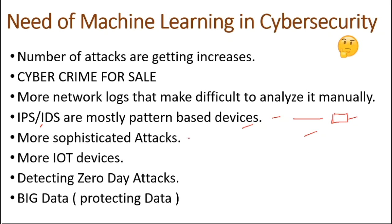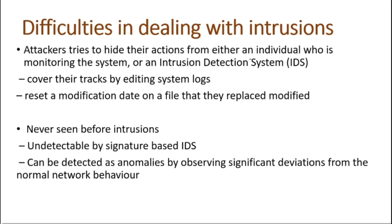We can detect zero-day attacks using anomaly detection in machine learning. In cybersecurity we are getting more sophisticated attacks — attackers are hiding their IP addresses, pretending to be inside your network, and even using quantum computing. There are more and more IoT devices to keep secure. We also need to detect zero-day attacks that IDS and IPS cannot catch. We have big data and we have to secure our data because data is information, and to secure it we need cybersecurity performed using machine learning.